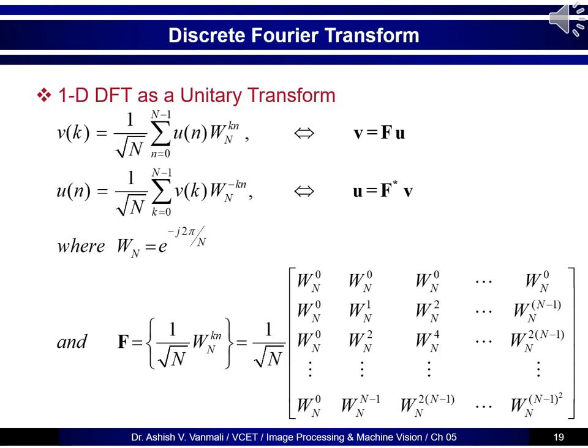We can write the equation of 1D DFT as a unit transform as: Vk is equal to 1 upon root N, summation n running from 0 to N minus 1, u of n times W_N raised to kn. The corresponding inverse equation will be: u of n is equal to 1 upon root N, summation k running over 0 to N minus 1, Vk times W_N raised to minus kn. Both forward and inverse transforms have the 1 upon root N term.